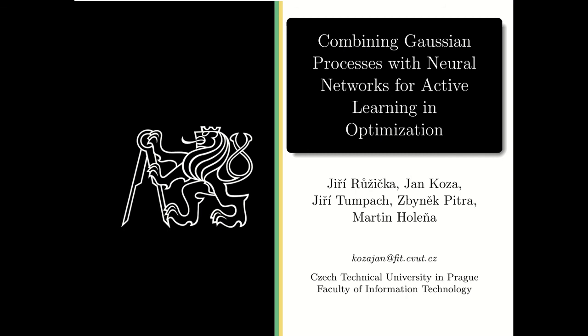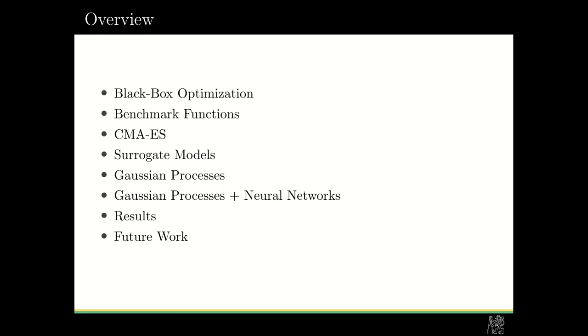First I would like to overview this presentation. First I will go through black box optimization as it is, then through benchmark functions we used, then I will talk about the CMA-ES algorithm, then I will tell you something about surrogate modeling, especially about Gaussian processes and Gaussian processes combined with neural networks. Then I will go through the results and ideas for future work.